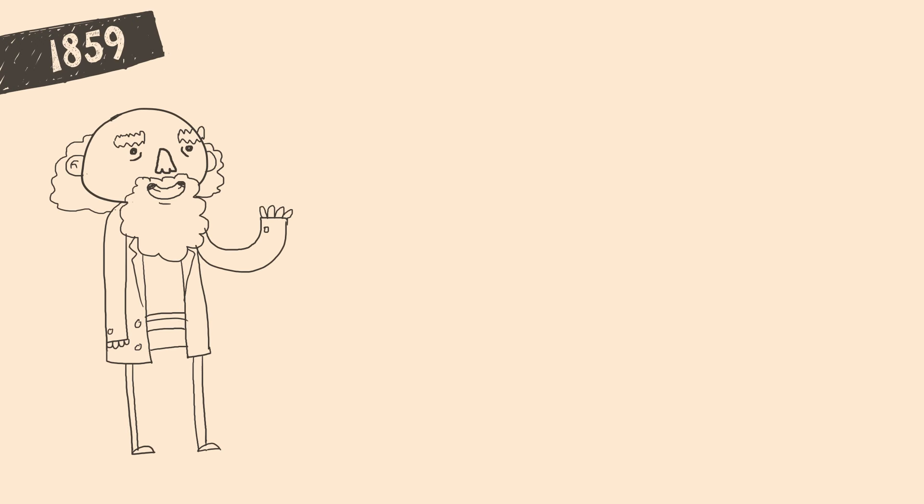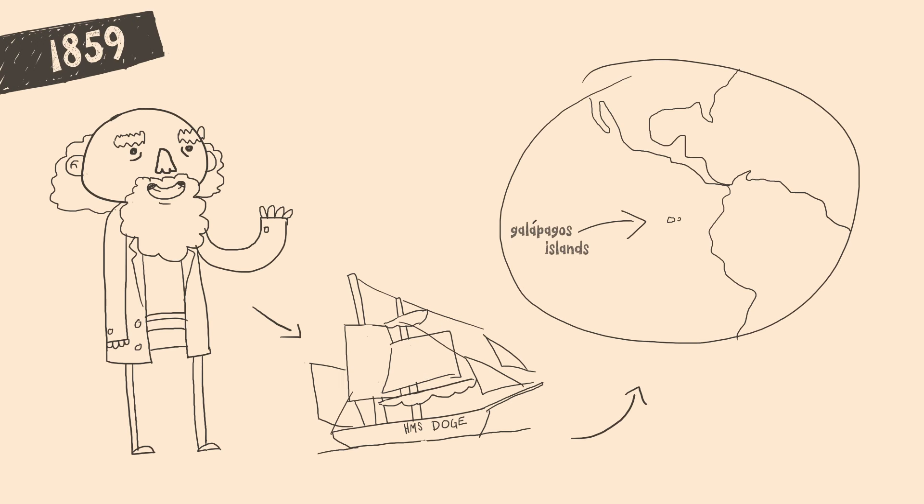It's 1859 and there was this guy named Charles Darwin. He rode on a beagle to these islands and had a little idea.